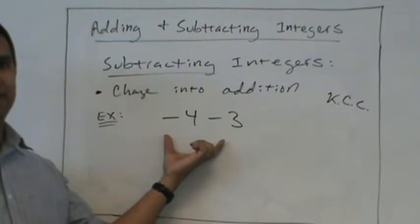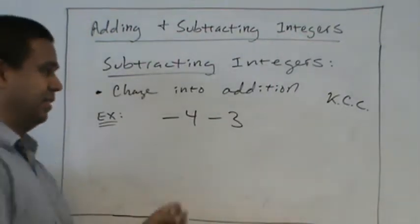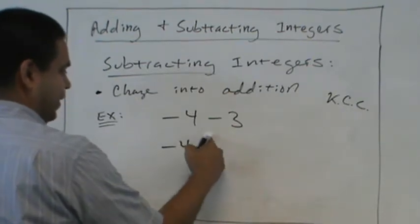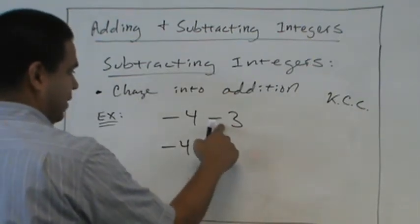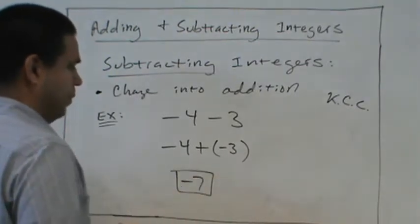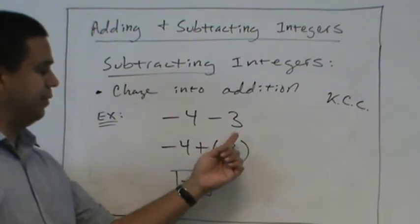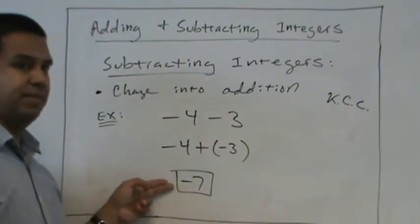How about this one? Could we do keep change change? Yes. Yes. So we keep the negative 4. Change it to addition. Negative 3. Negative 7. Okay? So we keep the negative 4. Change subtraction to addition. Change 3 to negative 3. Negative 7.